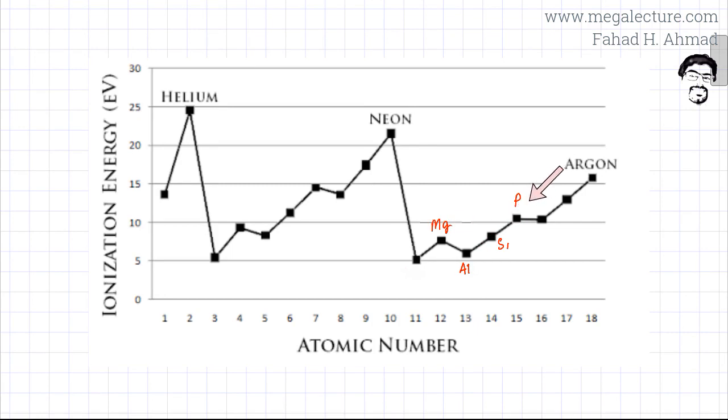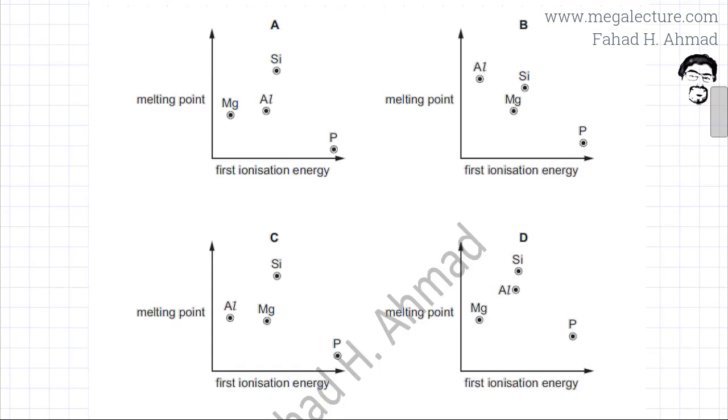So if I were to figure out which one has the least ionization energy, that would be aluminum followed by magnesium, then silicon, and then phosphorus. So the order is going to be the lowest Al, Mg, Si, and P. So aluminum has the lowest first ionization energy.